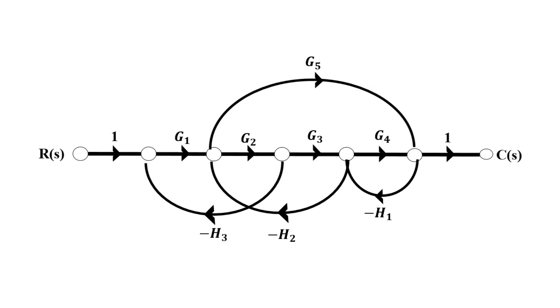The second forward path is passing from G1 and G5. So the gain of the second forward path is the multiplication of G1 and G5. We will name it P2.